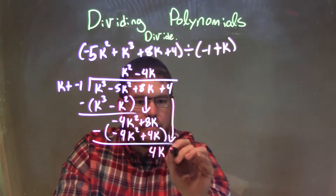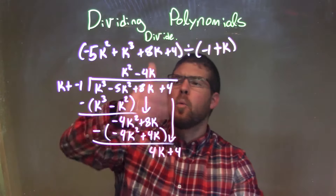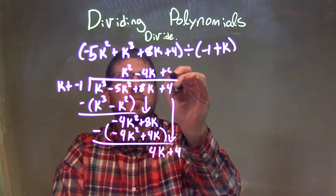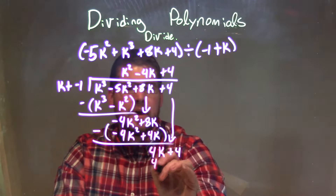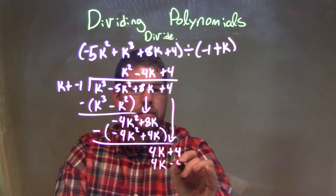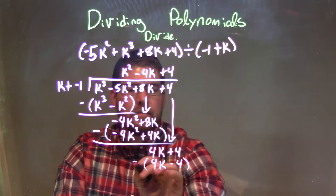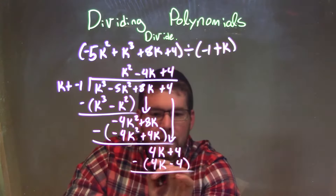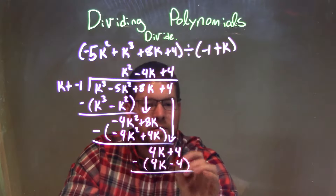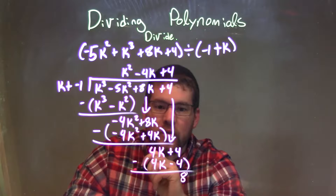Let's bring down the 4. What times k gives me 4k? Pretty simple — just a positive 4. 4 times k is 4k, and 4 times a negative 1 is a minus 4. When I subtract the two, 4k minus 4k is 0, and 4 minus a negative 4 is like adding a positive 4, which gives 8. So now I have a remainder of 8.